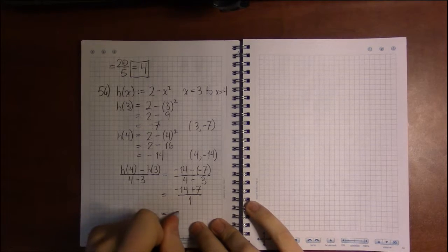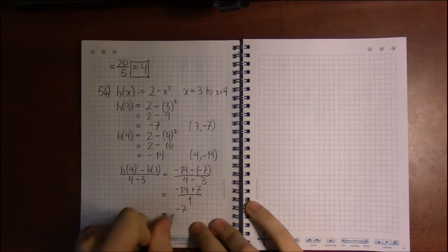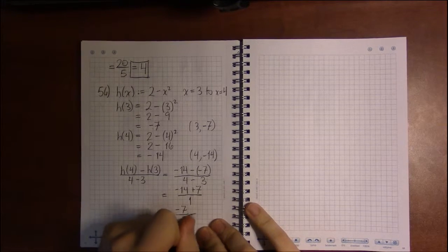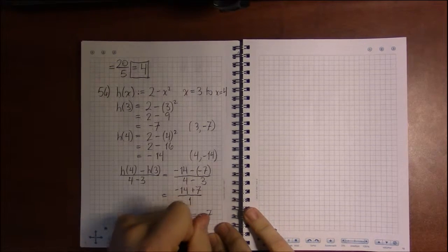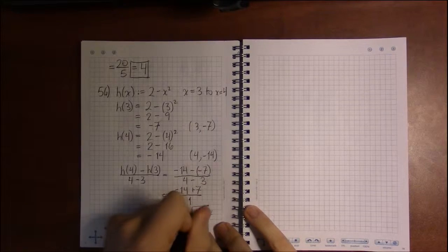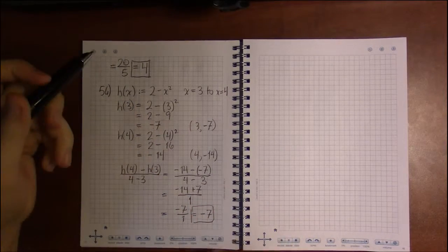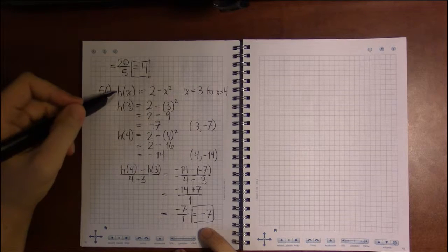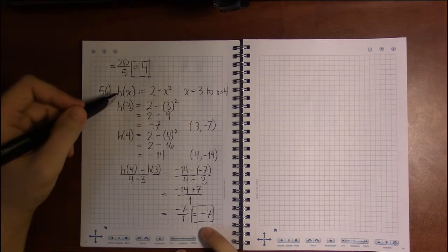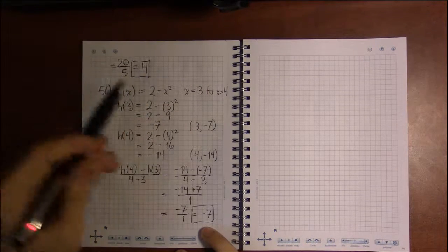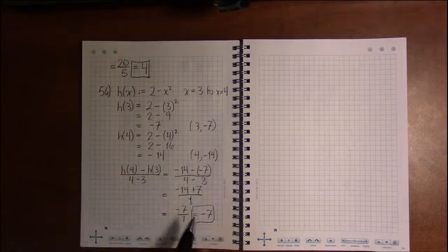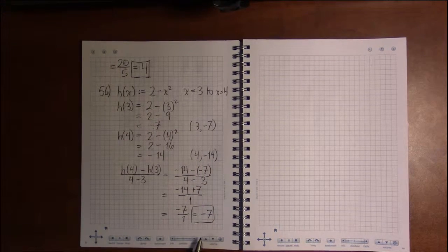And -14 + 7 is just -7. So our answer is that we have a slope of -7 between these two points, or that the average rate of change of h with respect to x over this interval is -7.